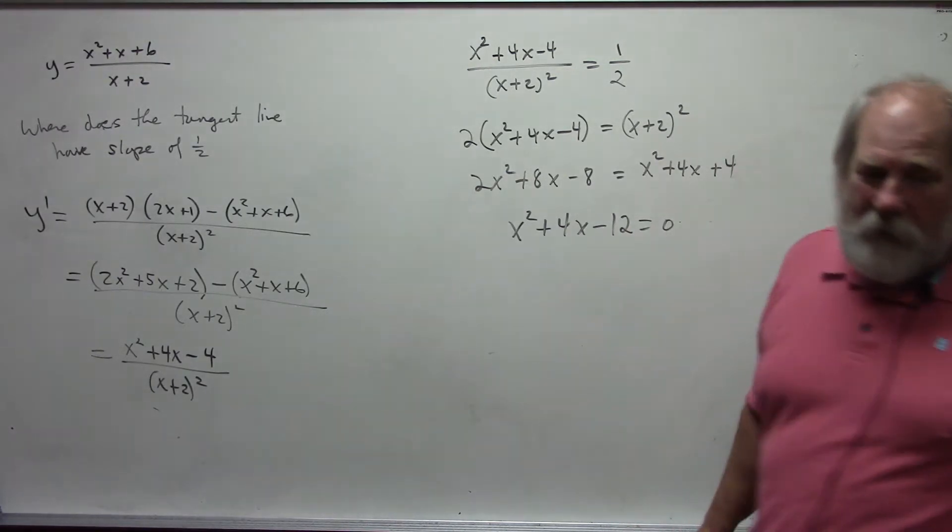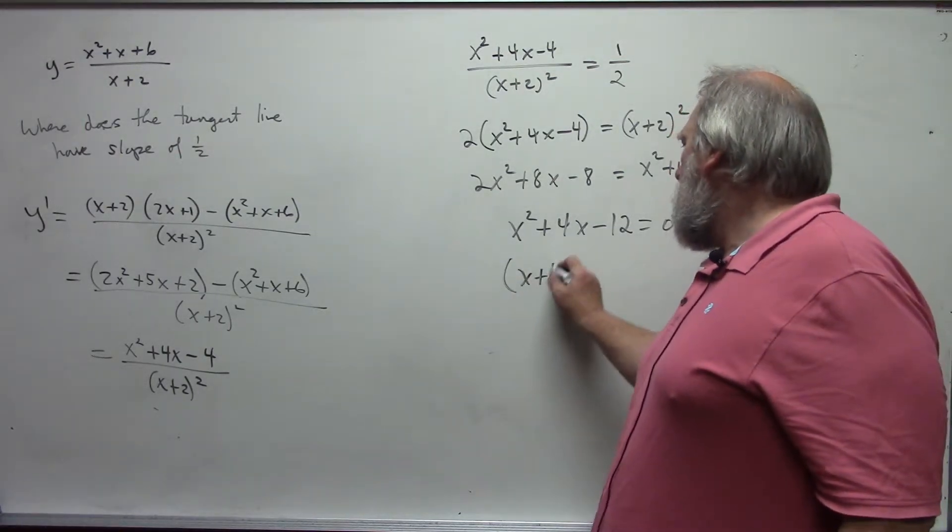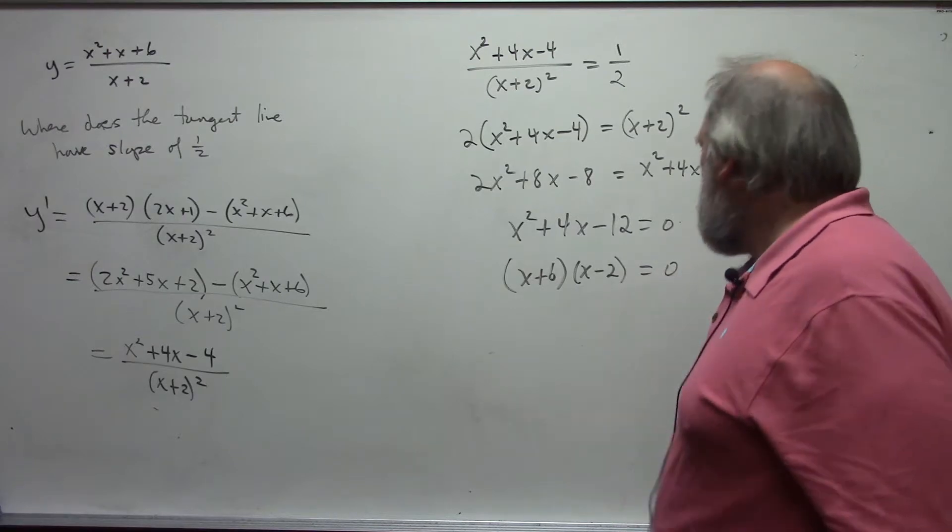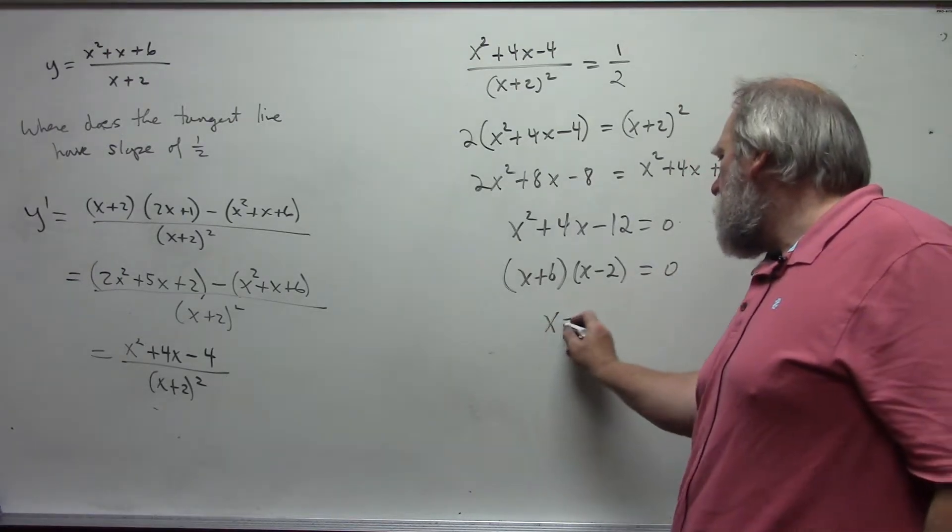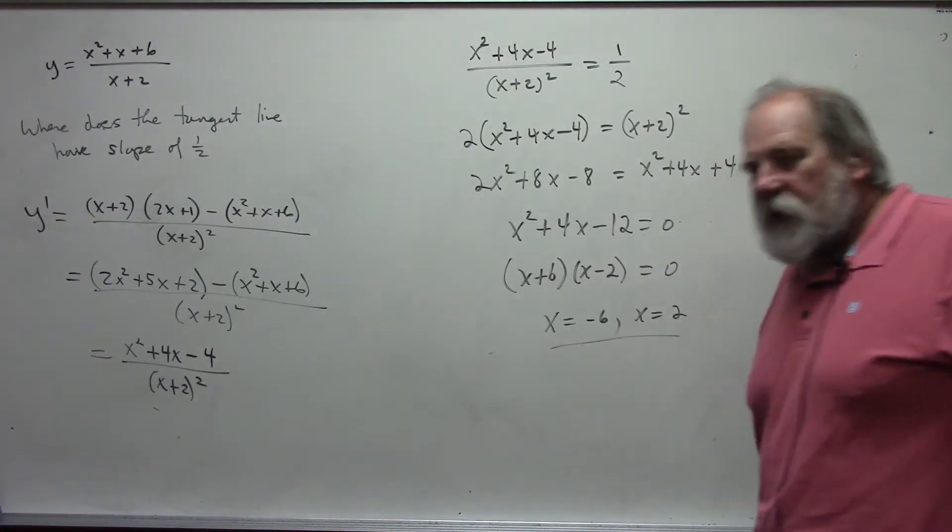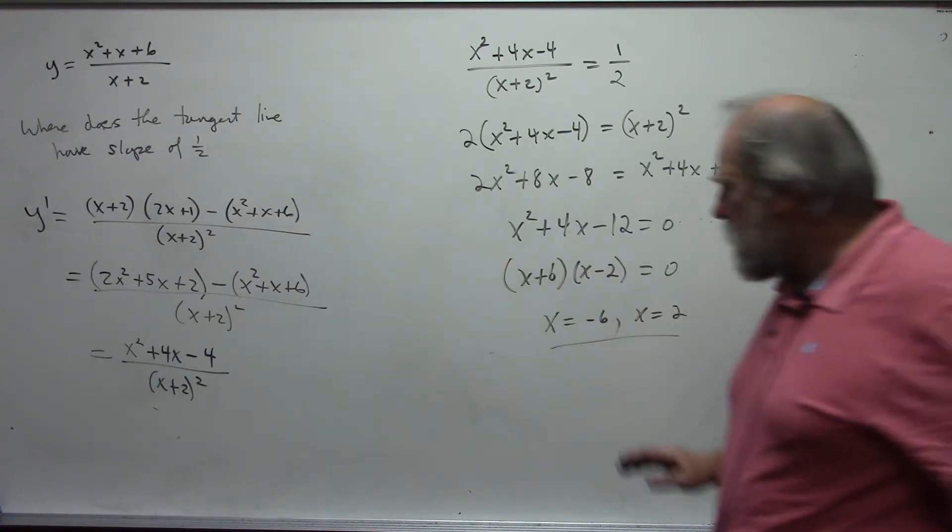And we can use whatever method we wish. Simplest in this case is to factor: x plus 6, x minus 2 equals 0. And so therefore, x equals negative 6 or x equals 2. This is where the tangent line has a slope of 1 half. Those are applications that you've seen.